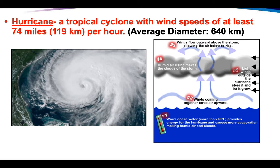Hurricanes are tropical cyclones with wind speeds of at least 74 miles per hour. As soon as it reaches that threshold of sustained winds at 74 miles per hour, it has been upgraded to a hurricane. They actually have a whole naming system — I believe they alternate the alphabet and alternate boy and girl names. There has definitely been an increased amount of hurricanes throughout the globe.